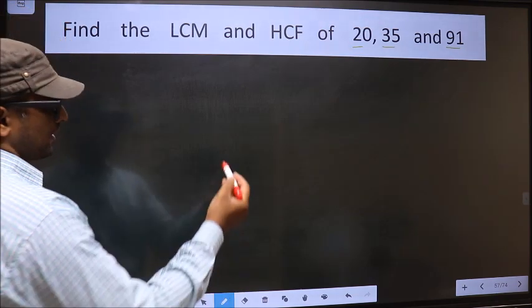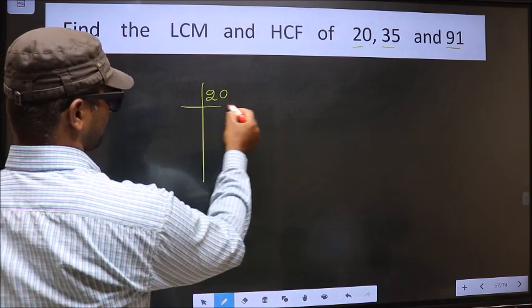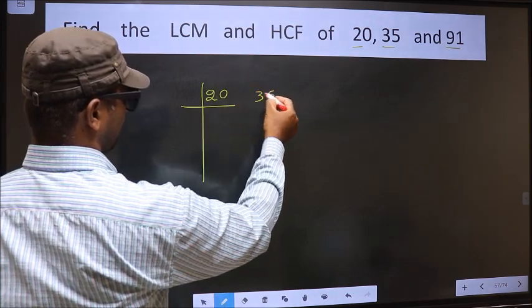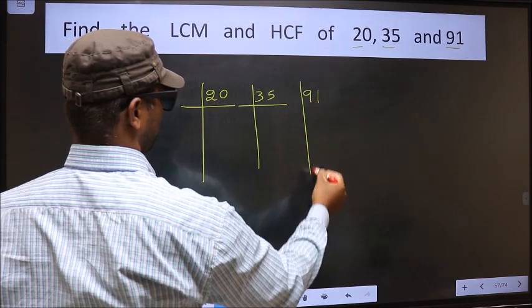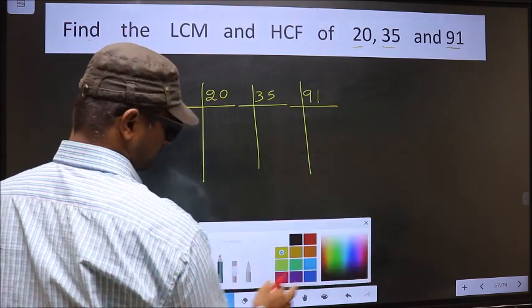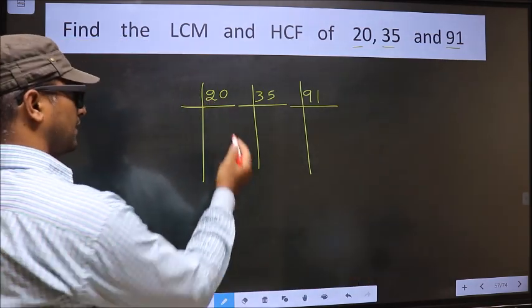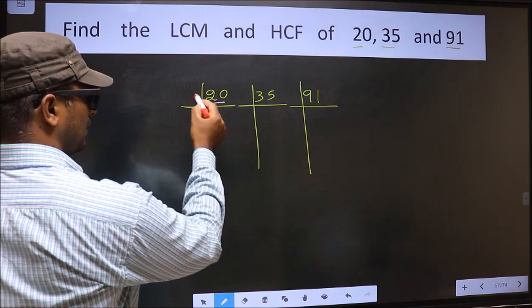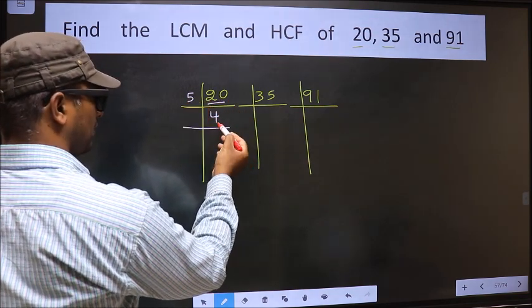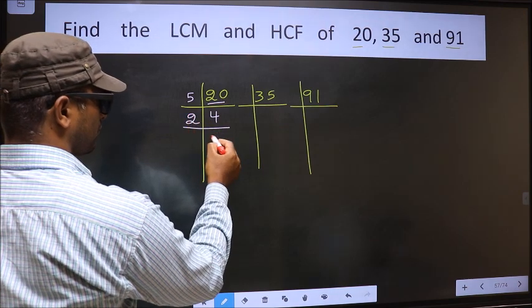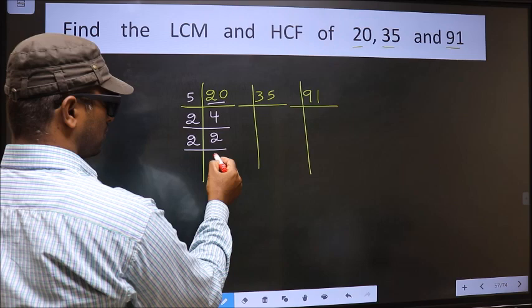The first number is 20. 20 is 5 times 4, which is 20. Now we have 4, 4 is 2 times 2, which is 4. Now we have 2, 2 is a prime number, so 2 times 1 is 2.